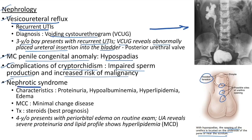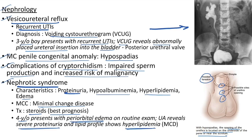Nephrotic syndrome: characteristics include proteinuria, hypoalbuminemia, hyperlipidemia, and edema. Most common cause is minimal change disease; treatment is with steroids and it has the best prognosis. Clinical case: 4-year-old presents with periorbital edema; urine analysis reveals severe proteinuria and lipid profile shows hyperlipidemia.